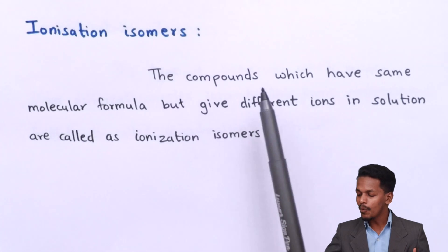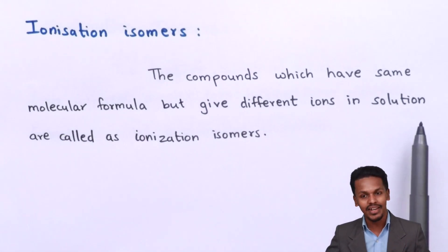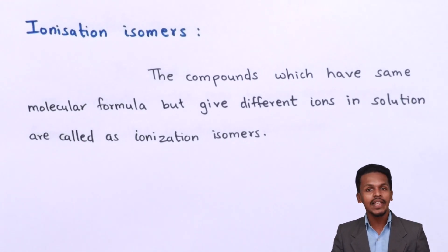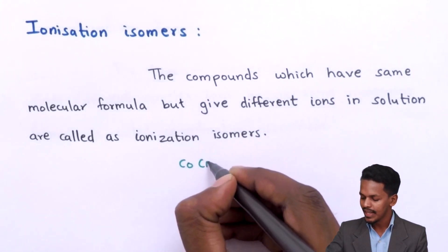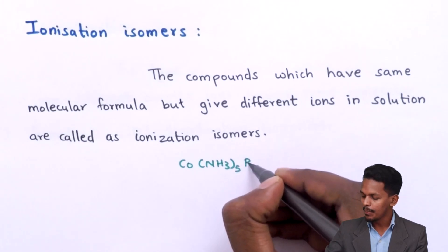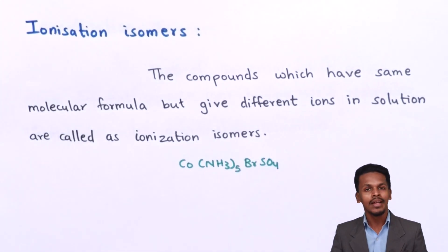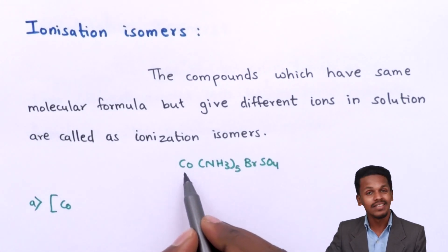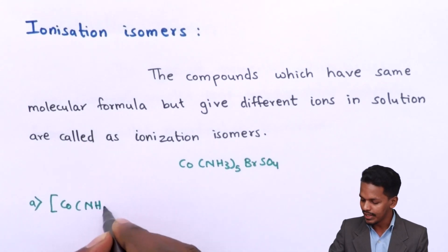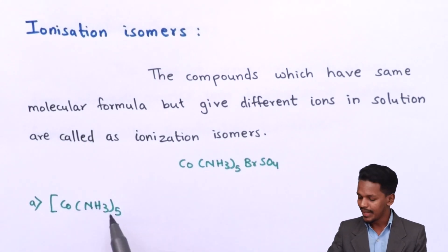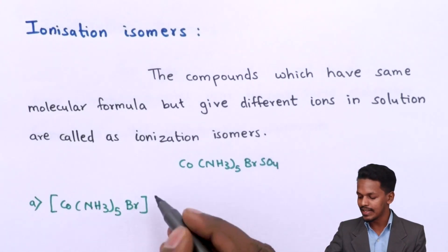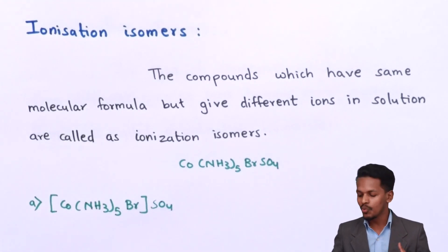The definition of ionization isomers: compounds which have the same molecular formula but produce different ions in solution are called ionization isomers. For example, consider the complex Co(NH₃)₅Br·SO₄. The first possibility is that cobalt is the central metal atom surrounded by NH₃ molecules, with Br in the secondary sphere and SO₄ in the primary sphere.